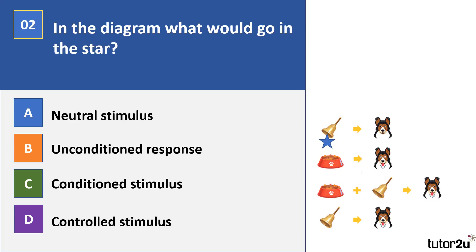Question 2. In the diagram, what would go in the star? There's a star next to the bell — what would that bell be labelled as? Is it A. Neutral stimulus? B. Unconditioned stimulus? C. Conditioned stimulus? Or D. Controlled stimulus? Pause the video.